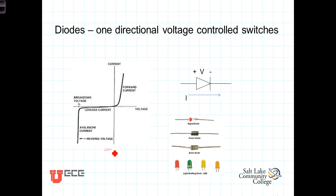We see here the typical current-voltage relationship of diodes. Increasing the voltage across the diode up to some threshold induces only a very small or negligible amount of current. But once the junction potential is reached, small changes in voltage result in large changes in current. In this sense, the diode acts as a voltage-controlled switch: when the external voltage gets large enough, the switch closes and the diode allows current to flow freely in the forward direction. Under a reverse biased voltage, the diode is effectively an open switch preventing current from flowing until the breakdown voltage is reached, at which point large amounts of current can flow as the covalent bonds are broken.